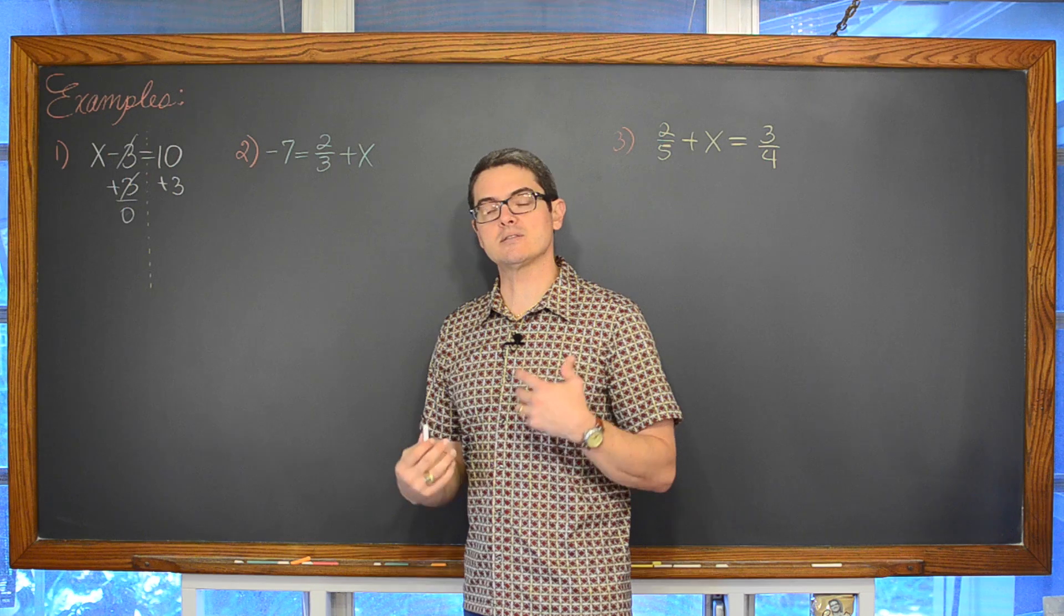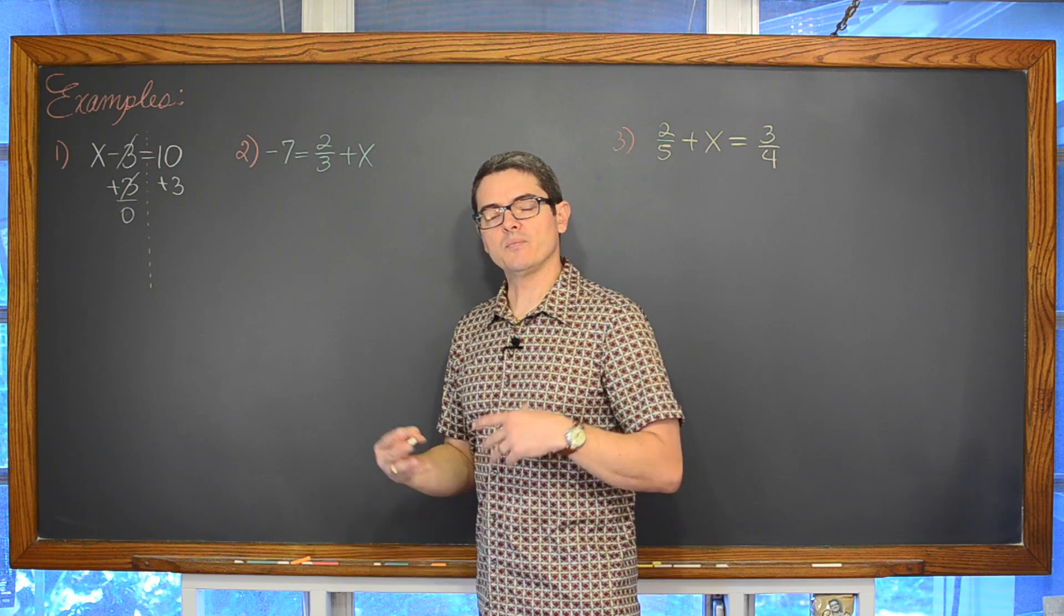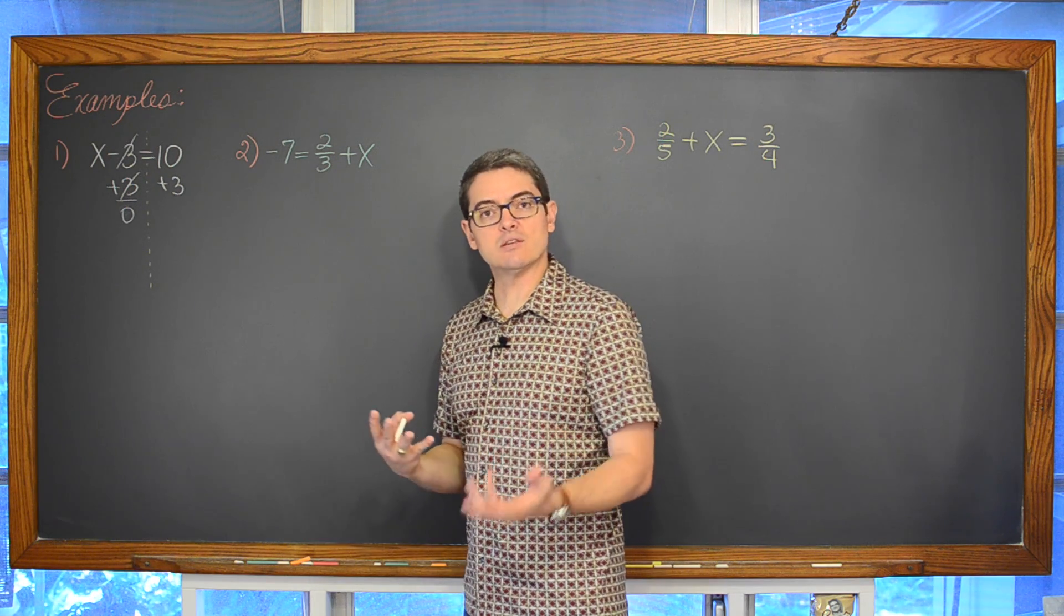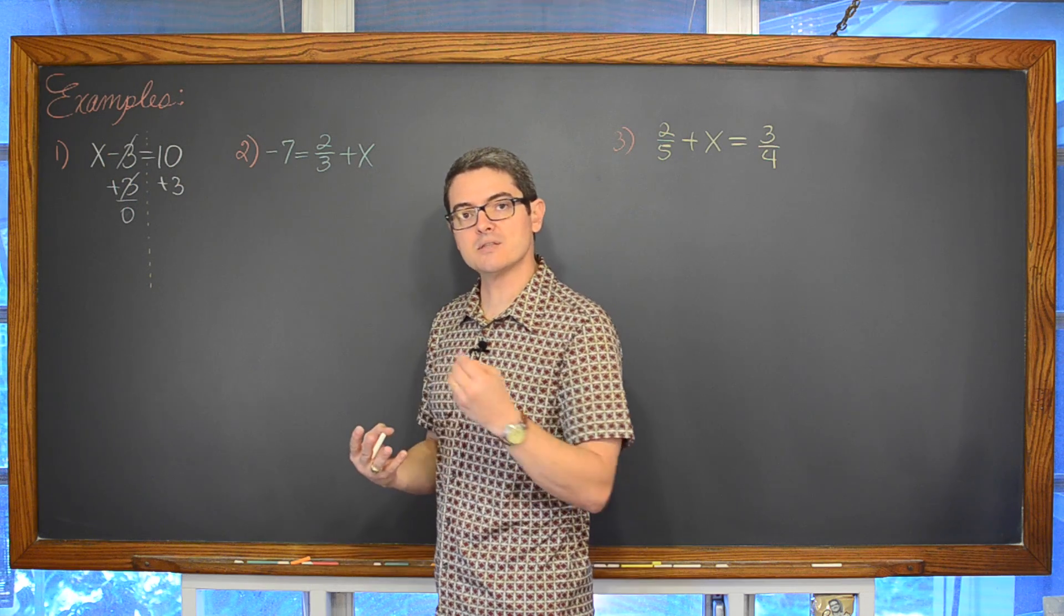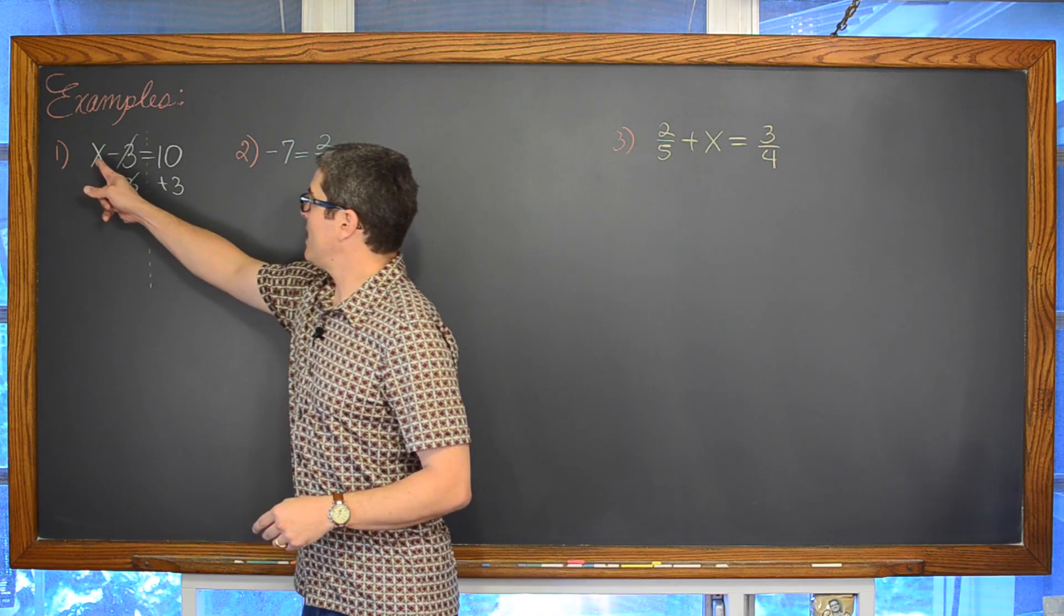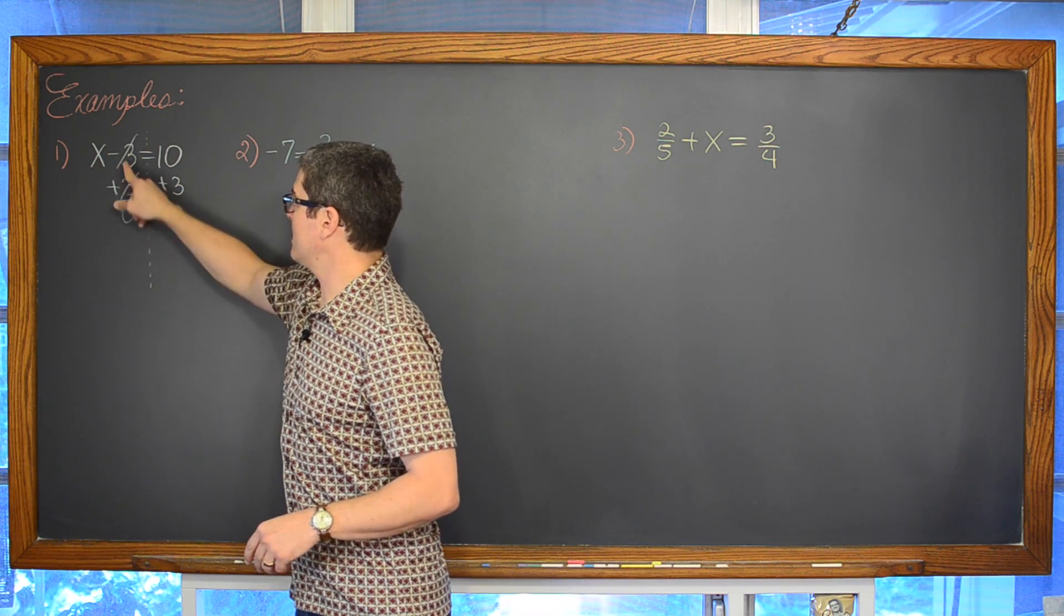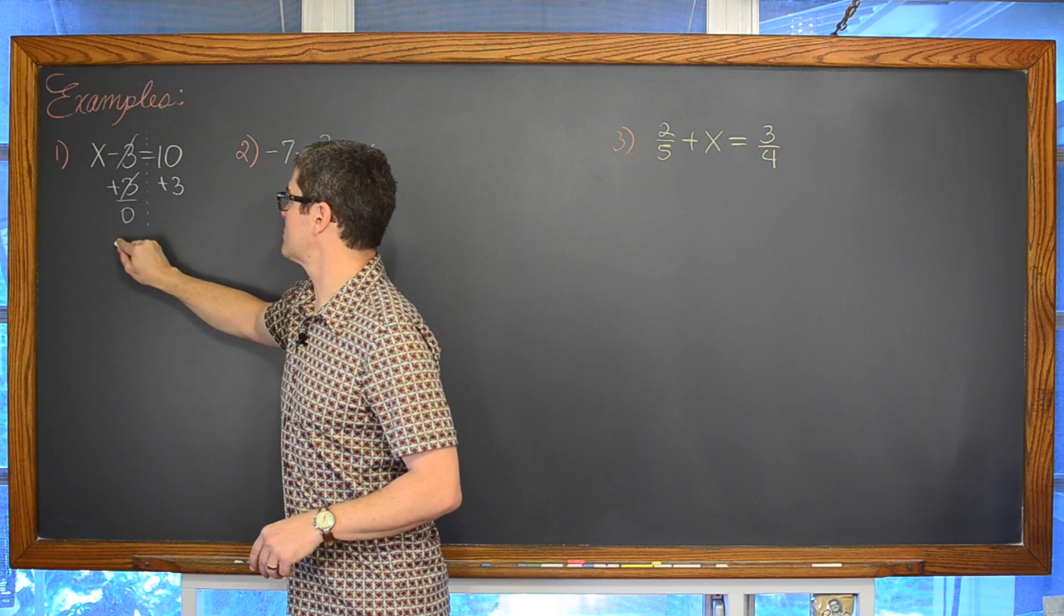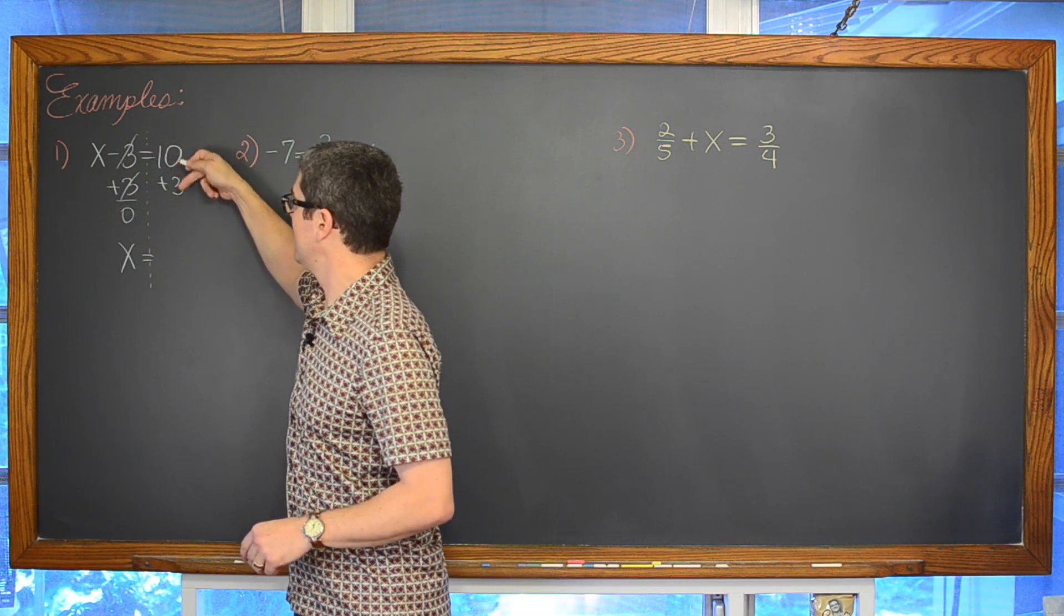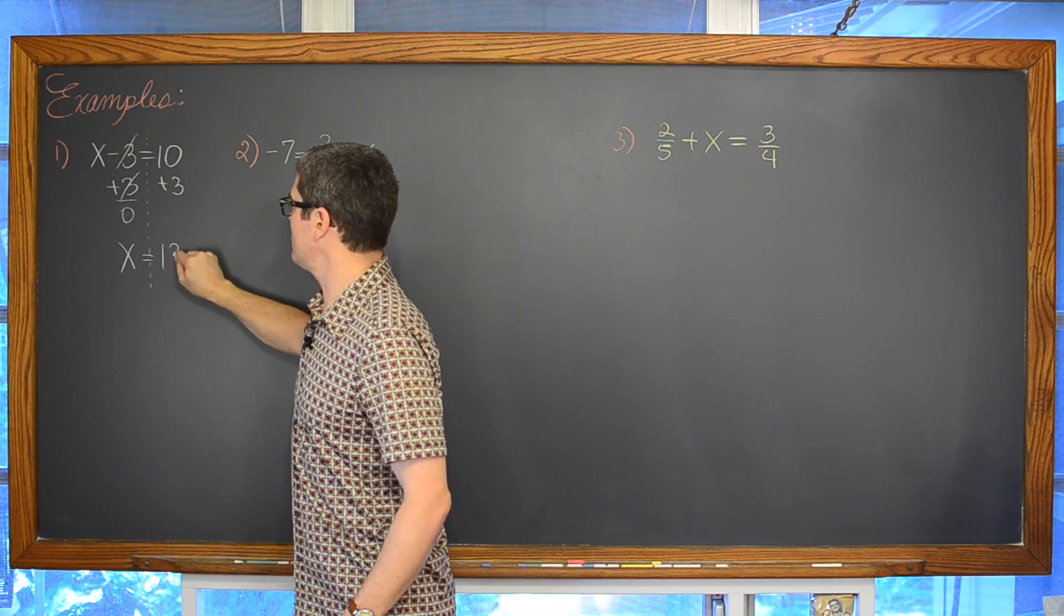When you add by 0, that is the identity for addition. Adding by 0 doesn't really change anything so you don't need to show that plus 0. And we have got the x coming down. Again the negative 3 plus 3 is 0. So we have x is equal to 10 plus 3 which is equal to 13.